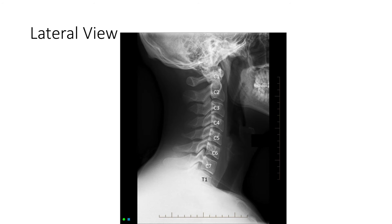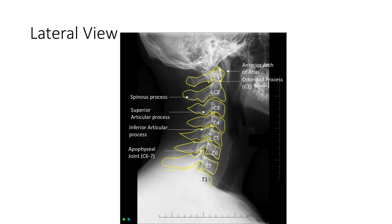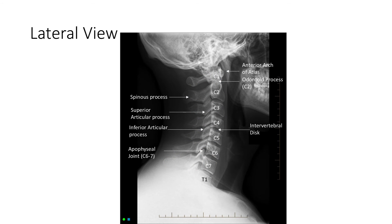Next we will look at the bones, tracing the cortical outline of all the bones to check for any disruptions. Then we will look at the disc spaces, which should all be approximately equal in height at the anterior and posterior margins and equal at all levels — the spaces should all be roughly symmetrical. Lastly, we will look around the edge of the image to check for any other visible structures, such as the trachea, which is anterior to the soft tissue.